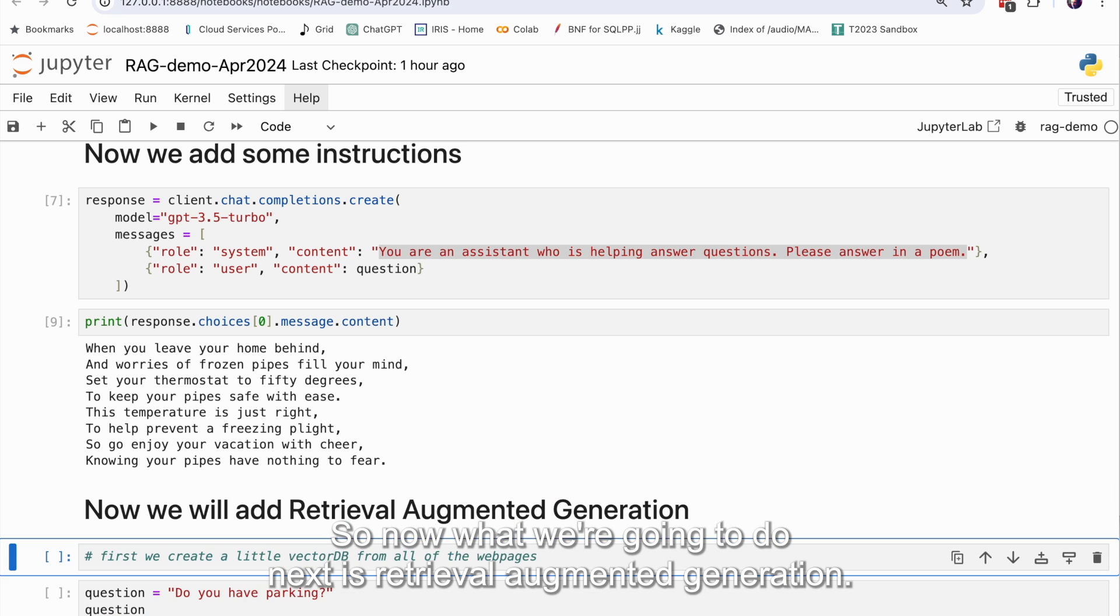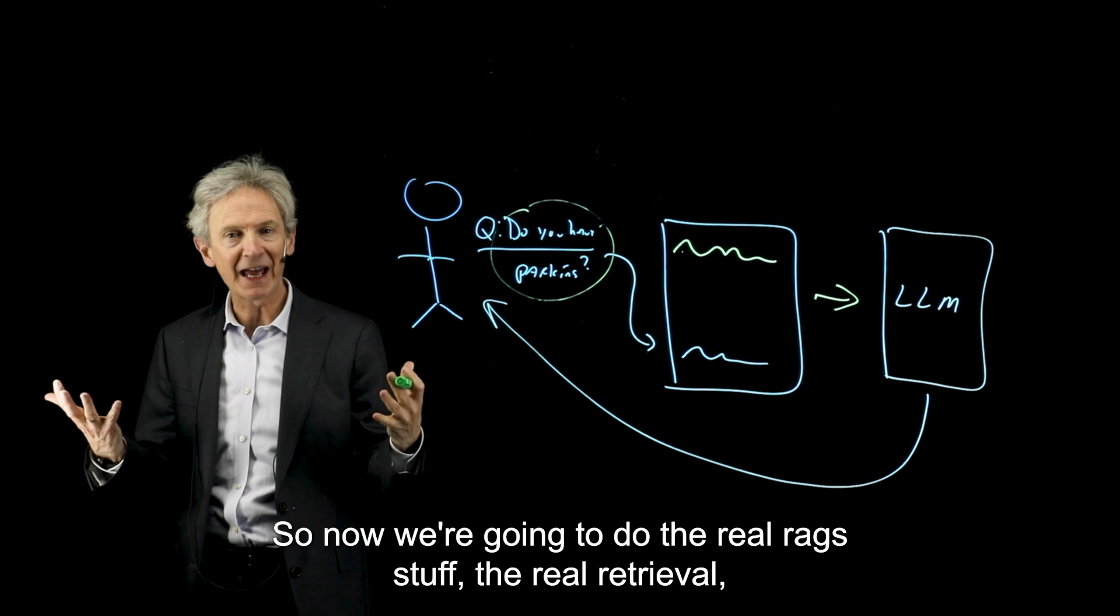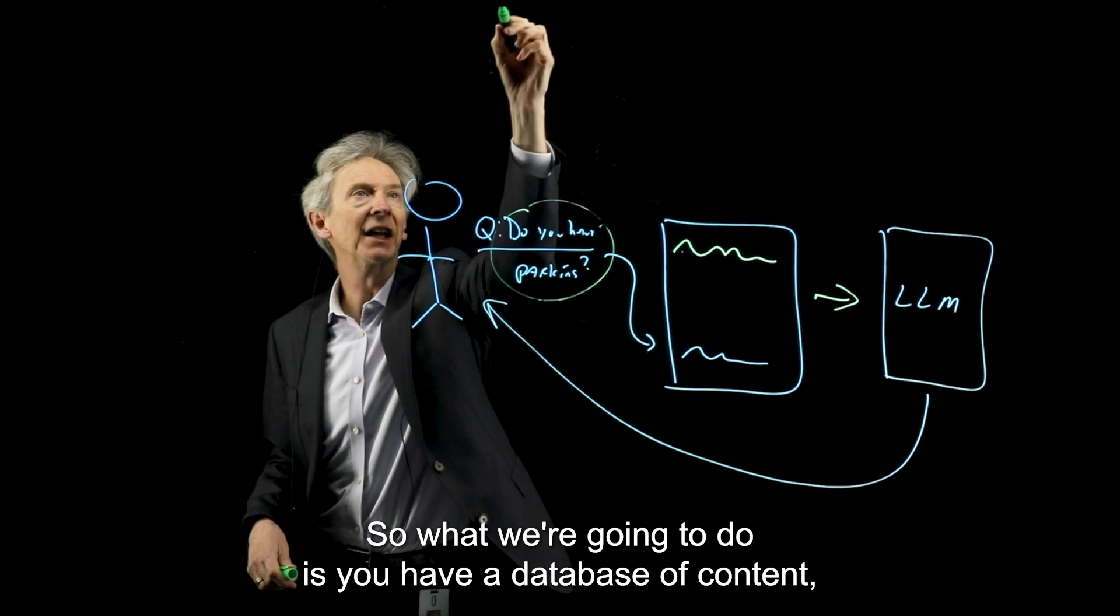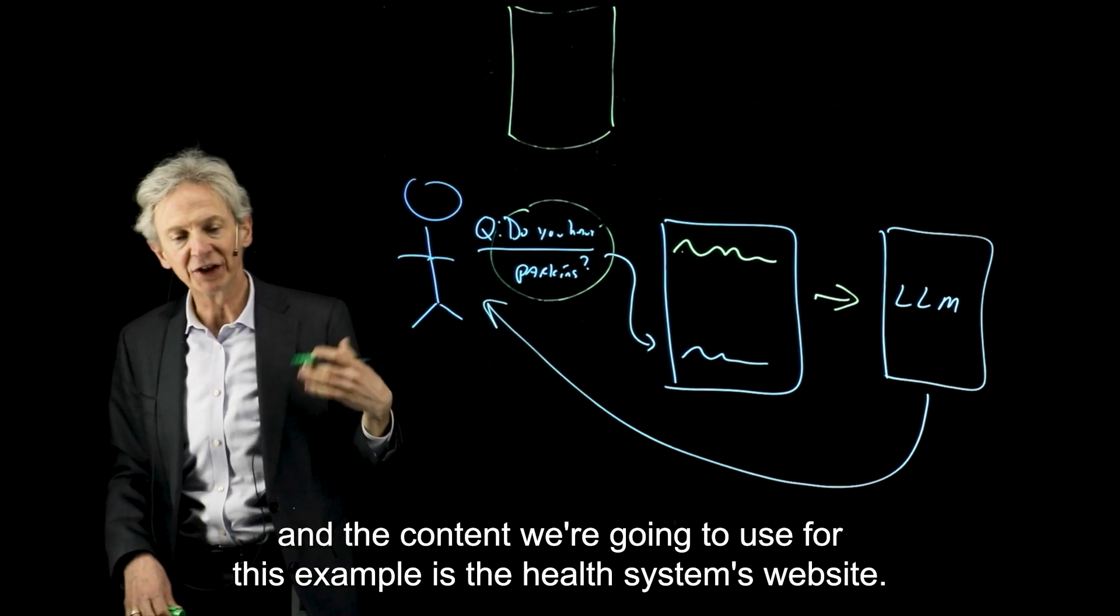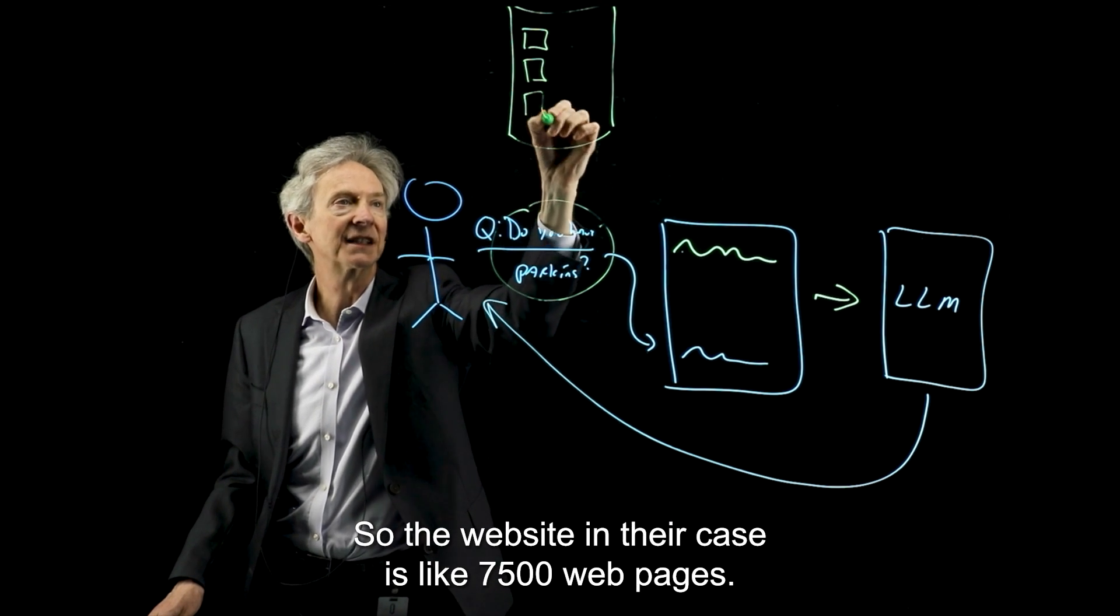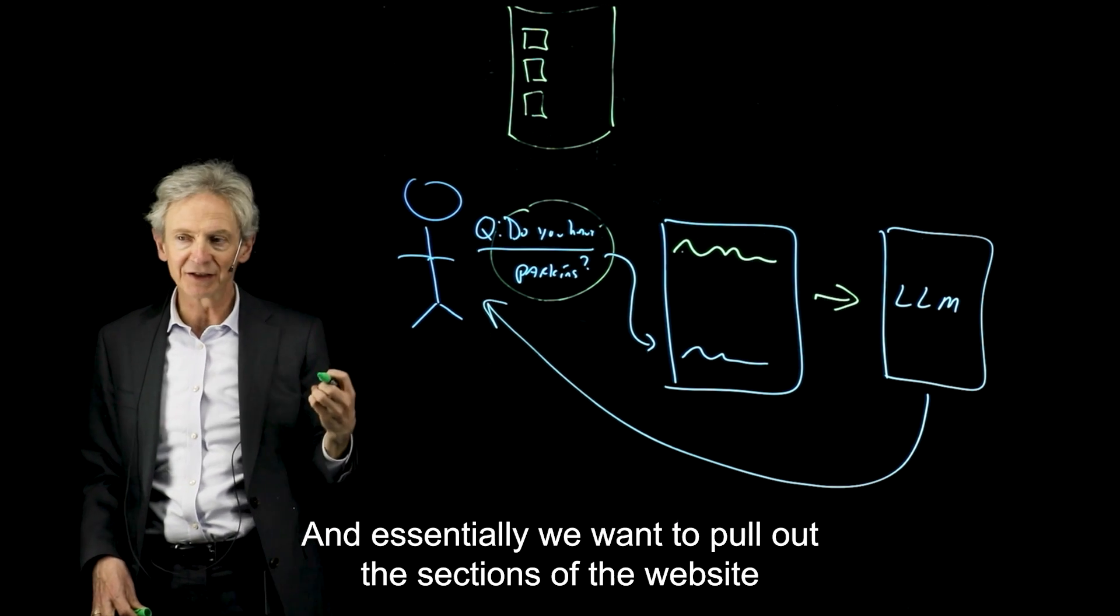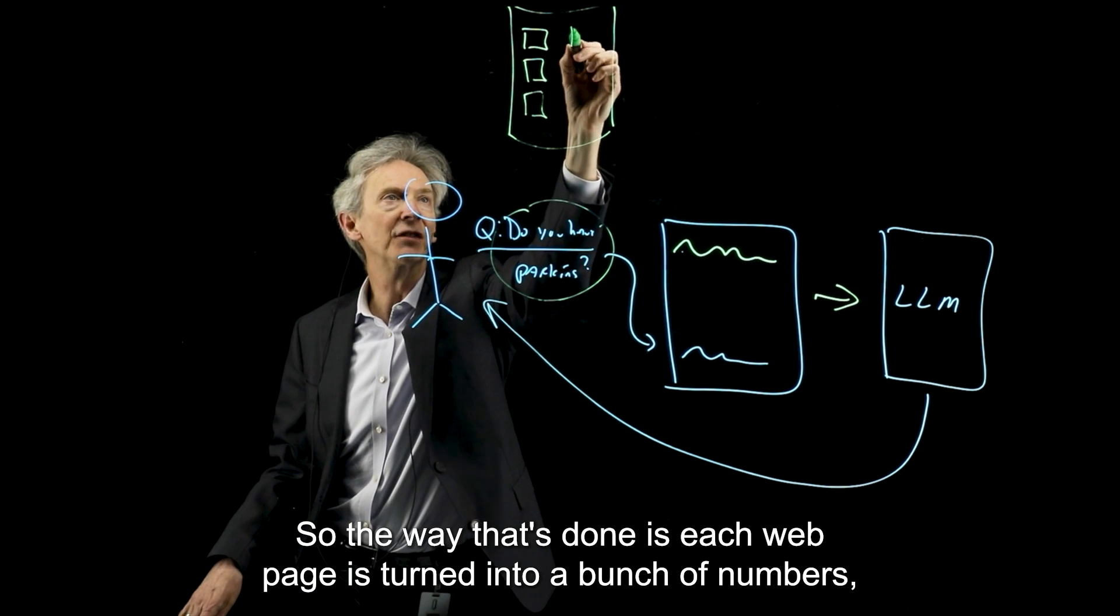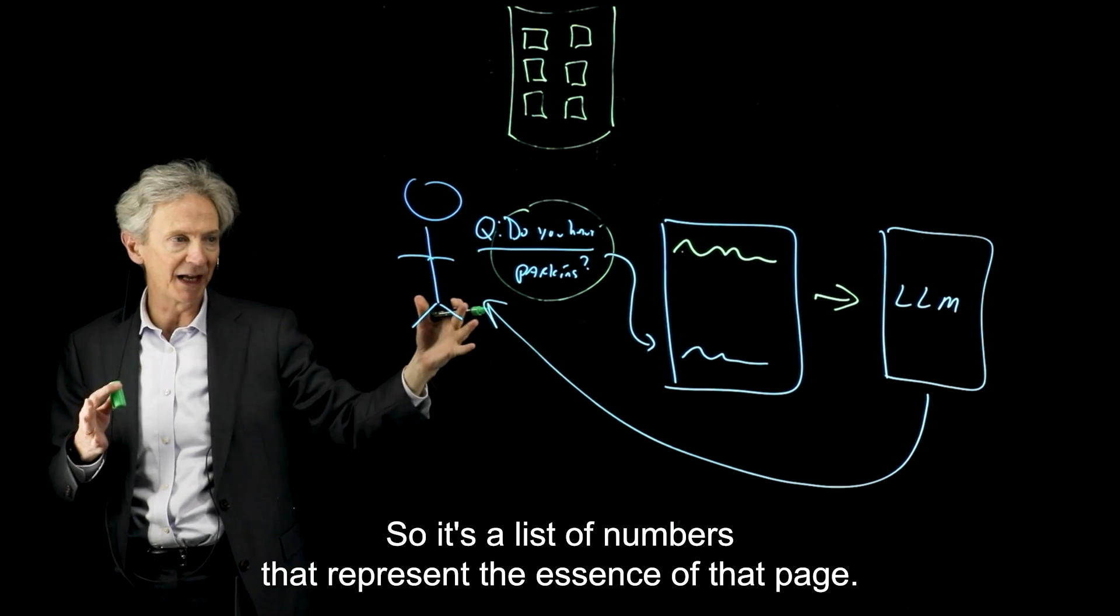Okay. So now what we're going to do next is retrieval augmented generation. All right. So now we're going to do the real RAG stuff, the real retrieval augmented generation. So what we're going to do is you have a database of content, and the content we're going to use for this example is the health system's website. So the website in their case is like 7,500 web pages. And essentially we want to pull off the sections of the website that talk about parking. So the way that's done is each web page is turned into a bunch of numbers, which is called an embedding.